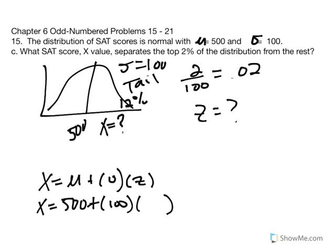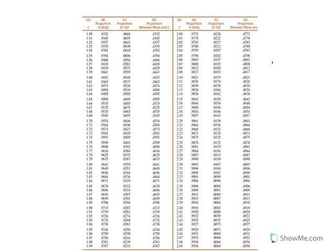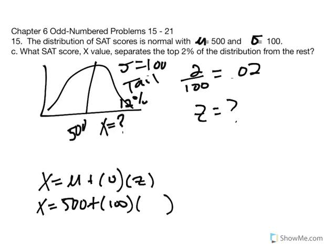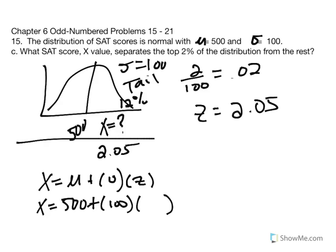What is the Z value that partitions the distribution with 2% in the tail to the right of the mean? Looking for a proportion of 0.0200 in the tail, moving down we find 0.0202, which corresponds to a Z score of 2.05. So Z equals 2.05, and we'll use that in our equation. Now we want the X value that is 2.05 standard deviation units above the mean: X equals the mean plus the product of our standard deviation multiplied by the Z of 2.05.